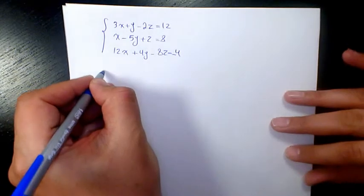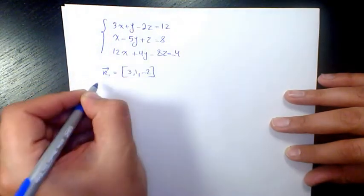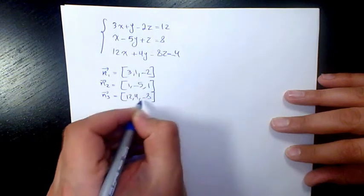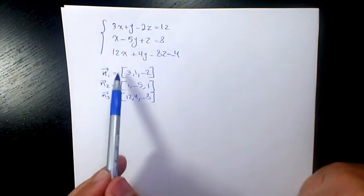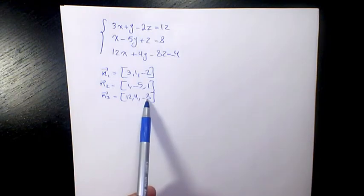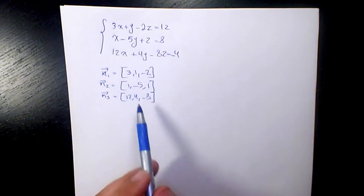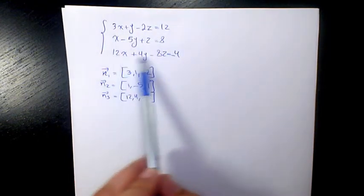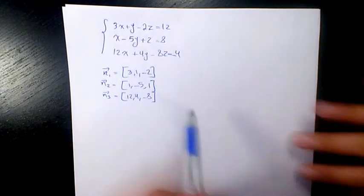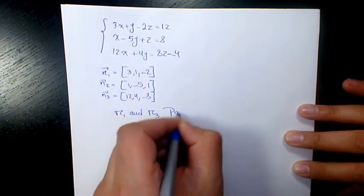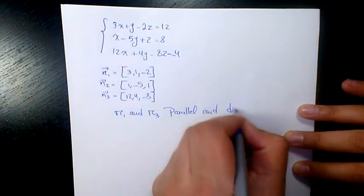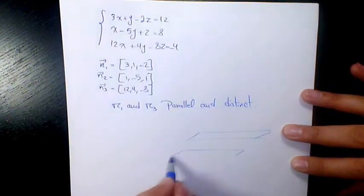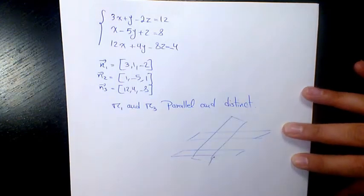The next example has n1 equal to (3, 1, -2), n2 equal to (1, -5, 1), and n3 equal to (12, 4, -8). Planes pi1 and pi3 are parallel because multiplying n1 by 4 gives n3. However, pi2 is not parallel to pi1 or pi3. Checking the constants: multiplying pi1's constant by 4 does not match pi3's constant, so pi1 and pi3 are parallel and distinct. Since pi2 is not parallel, it crosses the two parallel planes.